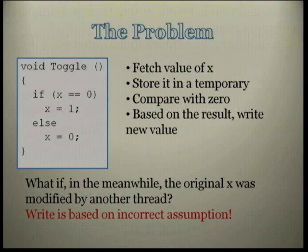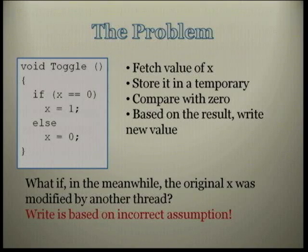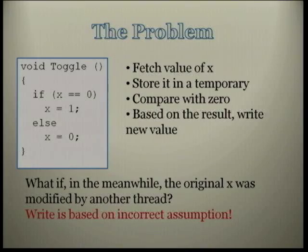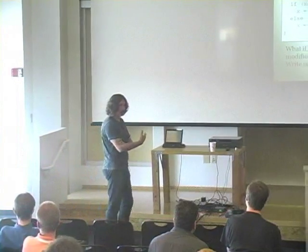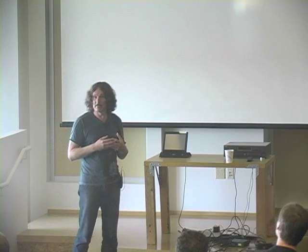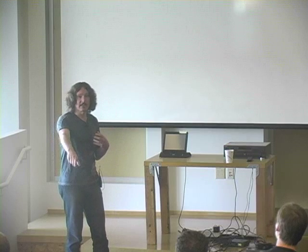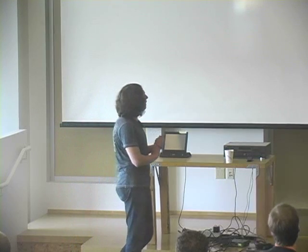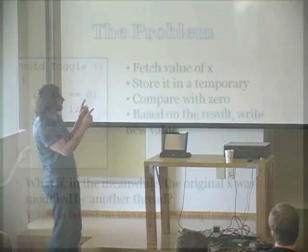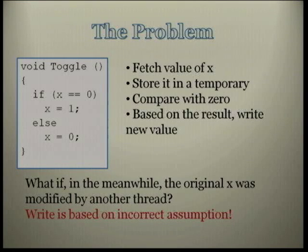In a multi-threaded environment, this doesn't work anymore. If multiple threads can access variable X and both call this function, they get into trouble. Let's analyze this in detail. The compiled code first fetches X from memory and puts it in a stack variable or register. Now we are operating on a cached value — a private thread cache, invisible to other threads — and we compare this cached value to 0.